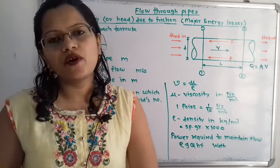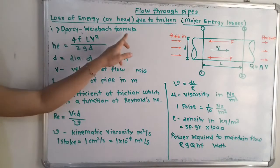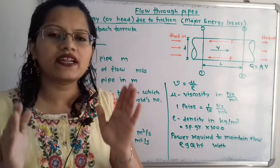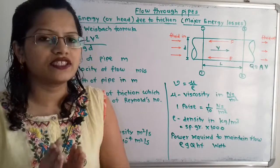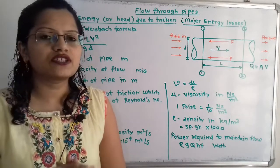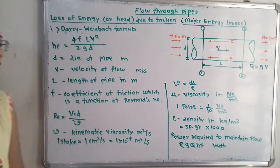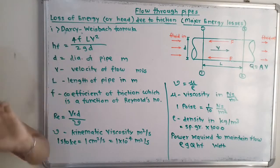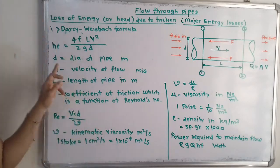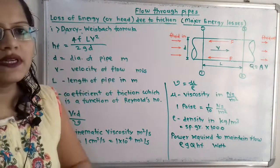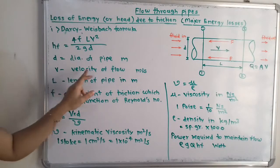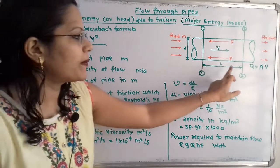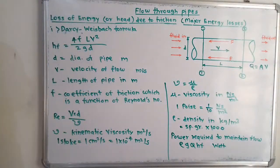Now we will move to the formula. The Darcy-Weisbach formula for loss of head due to friction is: HF = 4FLV² / 2GD. Here, D is the diameter of the pipe in meters, V is the velocity of flow in meters per second, and L is the length of the pipe in meters.